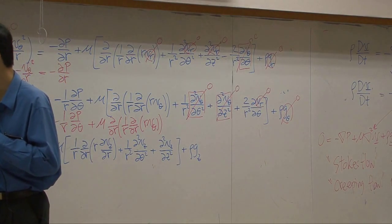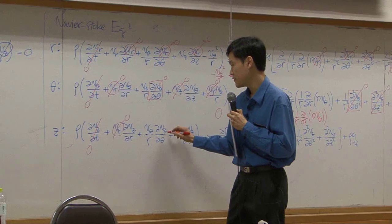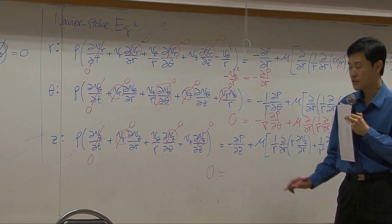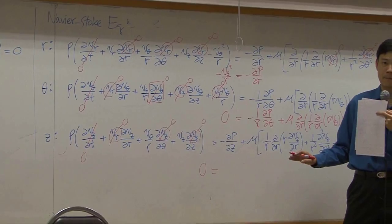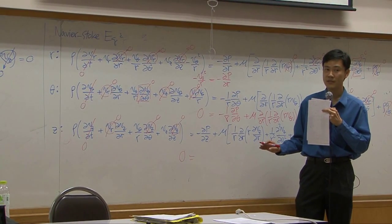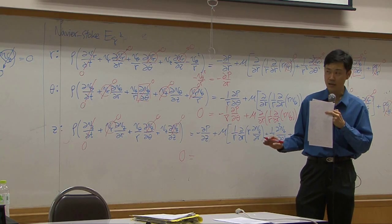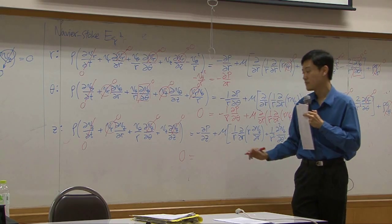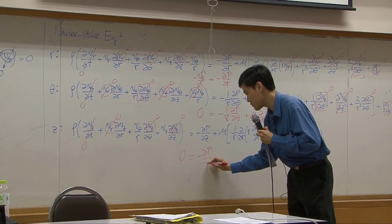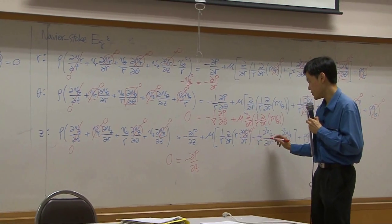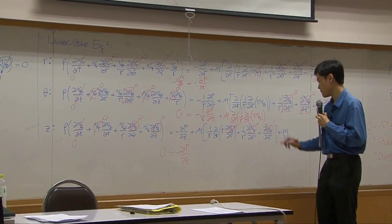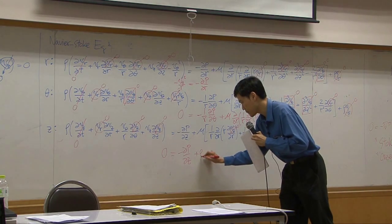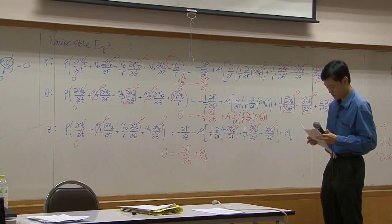Last, the Z direction: steady state assumption means Vz is zero, so the left hand side becomes zero. Does pressure change with respect to Z? Yes, according to the weight of the liquid on top, so this term cannot be dropped. Vz terms here are zero. And gravity goes down in the Z direction, so it must be kept.